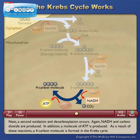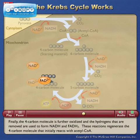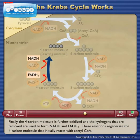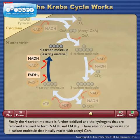In addition, a molecule of ATP is produced. As a result of these reactions, a four-carbon molecule is formed in the Krebs cycle. Finally, the four-carbon molecule is further oxidized and the hydrogens that are removed are used to form NADH and FADH2. These reactions regenerate the four-carbon molecule that initially reacts with acetyl CoA.